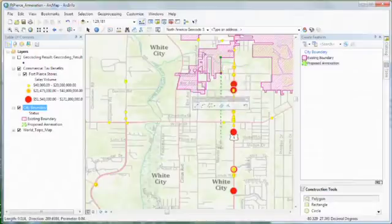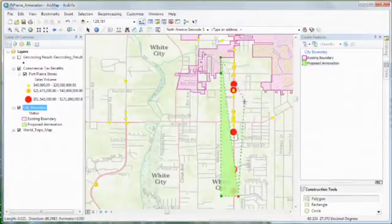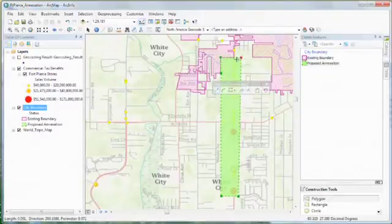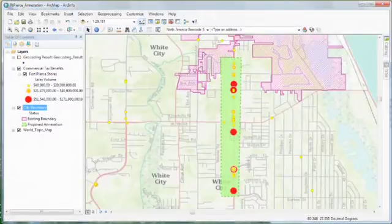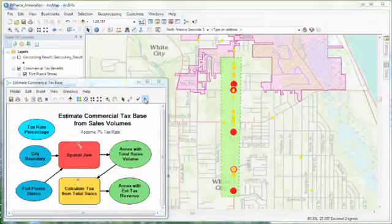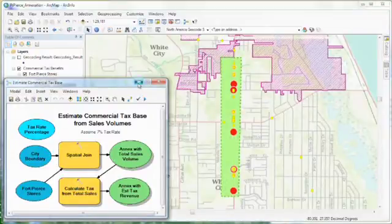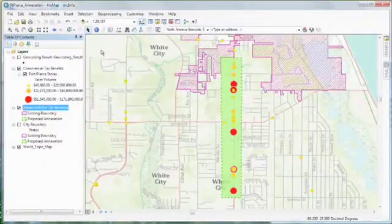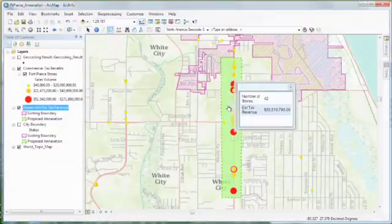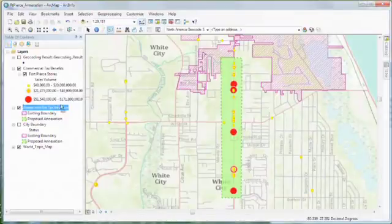While this sketch shows the affected area visually, the decision makers will also need estimates of the commercial tax benefit that could result from this change. A quick analysis can help us to generate this new information. Here, the analysis results summarize the commercial tax benefit that could be realized by annexing this area.